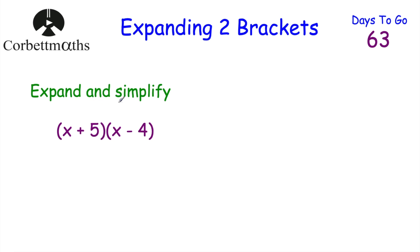This time we've been asked to expand and simplify (x + 5)(x − 4). So let's multiply both terms by x to get x lots of it, then multiply both terms by 5 to get 5 lots of it, and then add them together.